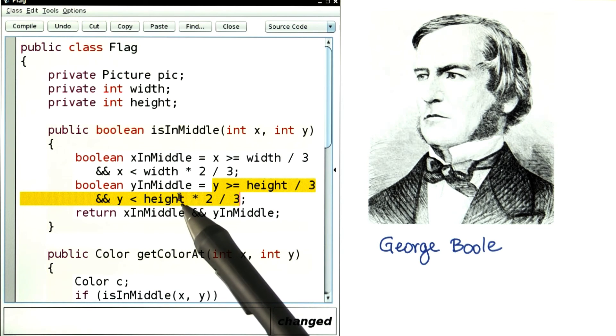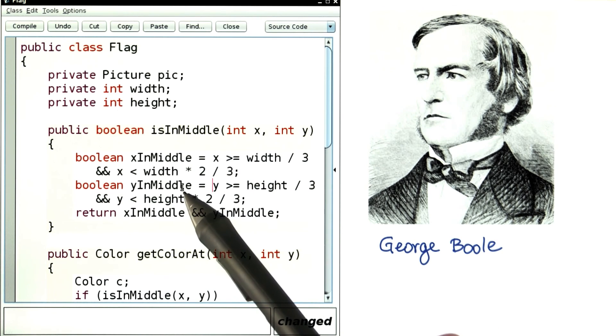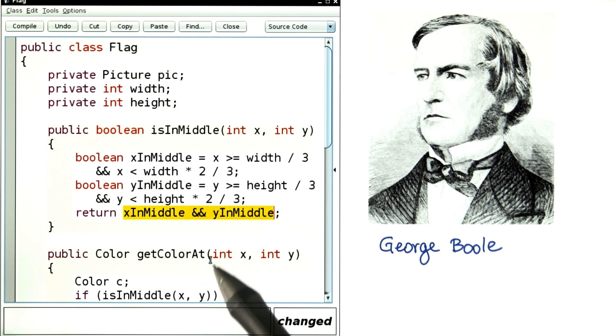Why might I want to do this? Because each of those conditions is complicated enough that by saving it in a variable, it makes the code easier to read. Now over here, I say if both of these conditions are fulfilled, then the point is in the middle, so I return the and of these two.